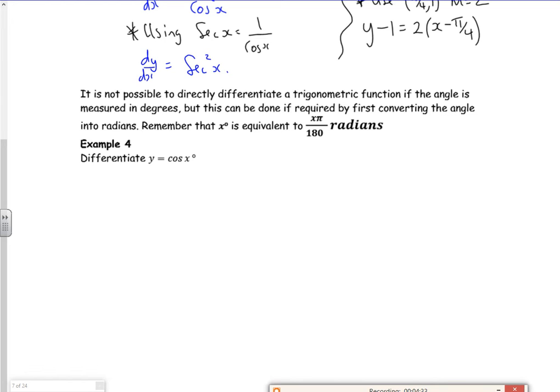So what we need to do is change it over into radians. This is in degrees. To change from degrees to radians, you divide by 180 and times by pi. So my y equals cos of pi over 180 times by x. The pi over 180 is just a constant, so when I differentiate using the chain rule, that constant just goes to the front.